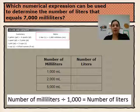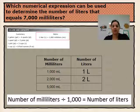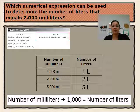So if we have 1,000 milliliters and divide by 1,000, that equals 1 liter. 2,000 milliliters divided by 1,000 equals 2 liters. 5,000 milliliters divided by 1,000 equals 5 liters. So the numerical expression to find the number of liters that equals 7,000 milliliters is: 7,000 divided by 1,000 equals 7 liters.